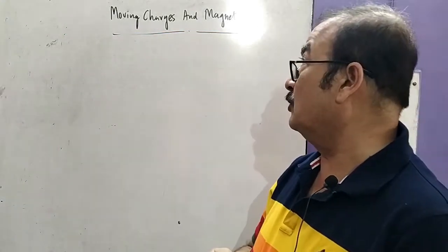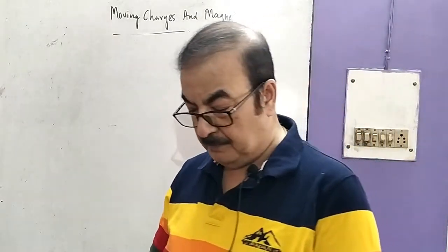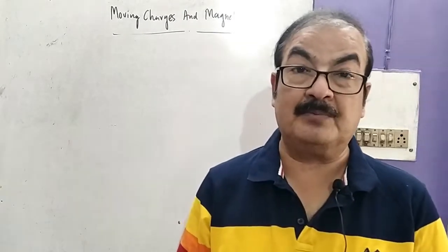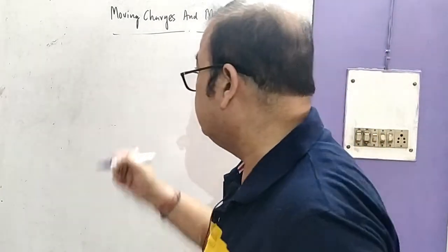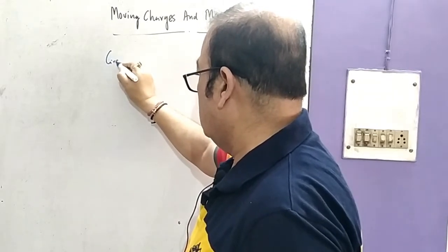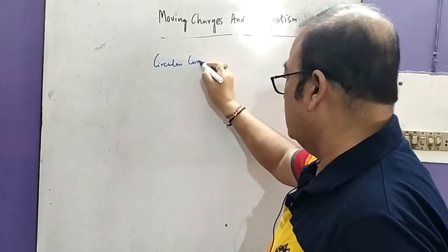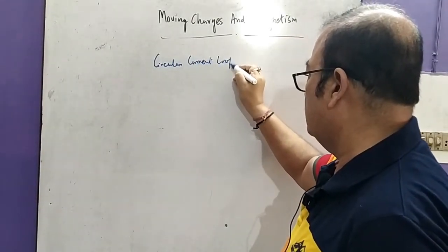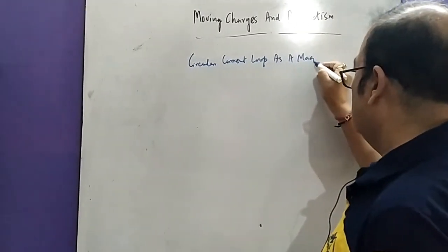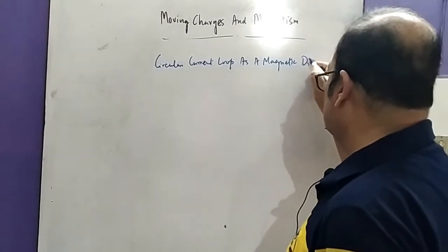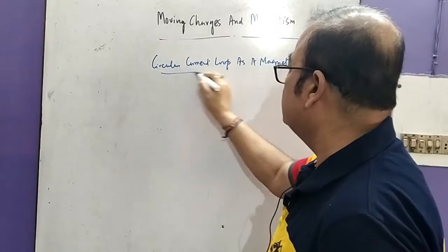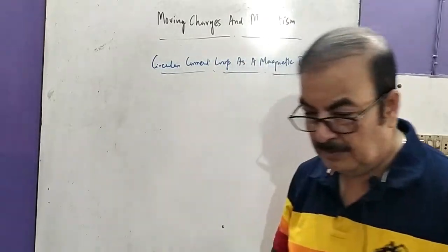Good morning and welcome back to today's lecture. We continue the topic of Moving Charges and Magnetism. In the previous lecture we discussed the force between two parallel wires and the concept of magnetic dipole moment. Today we will discuss that the circular current loop behaves like a magnetic dipole. This is our today's topic.